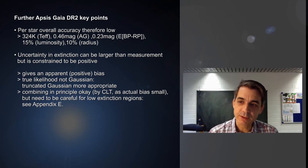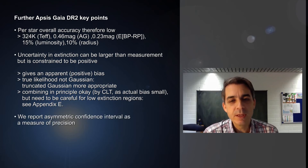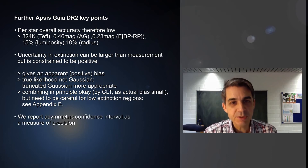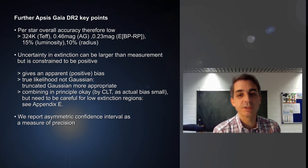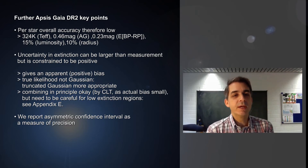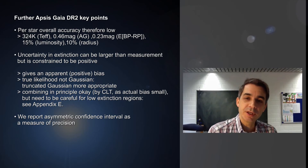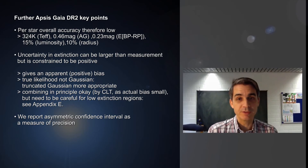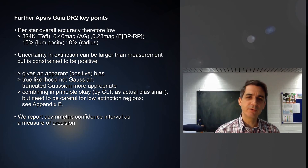In addition to the five parameters we report, we also report uncertainty estimates. Because of the positivity constraint — and physically all the parameters have to be positive — we actually report two values: an asymmetric confidence interval. You need to treat that appropriately, but it is only a rough estimate of the precision we achieve.